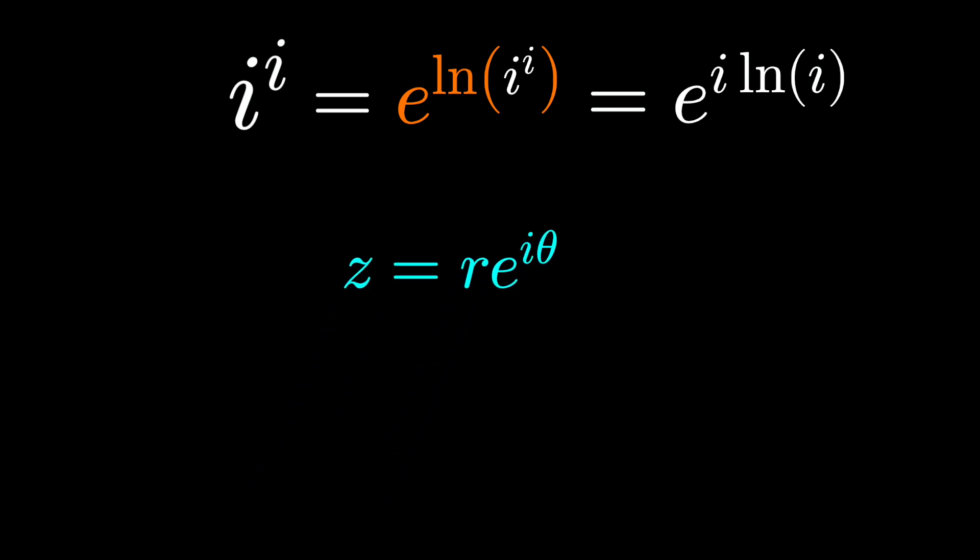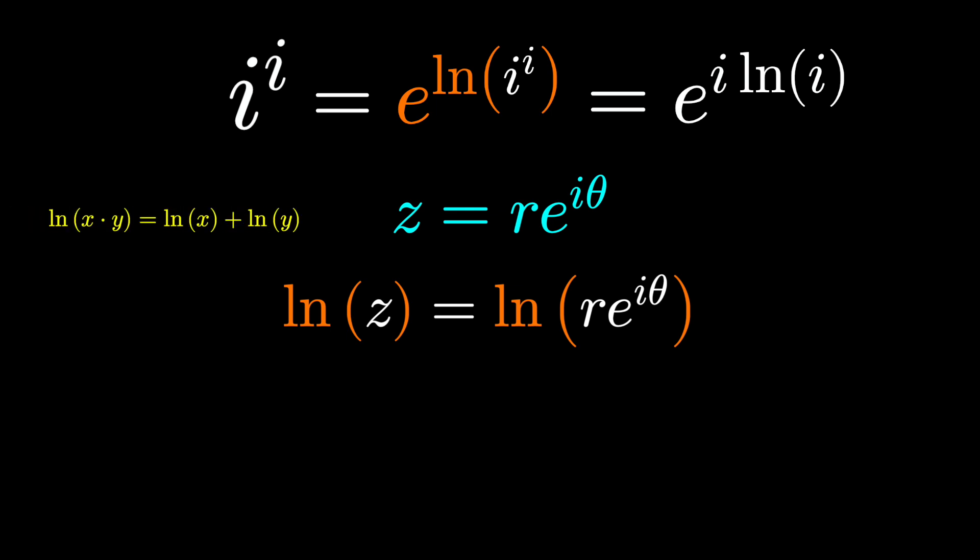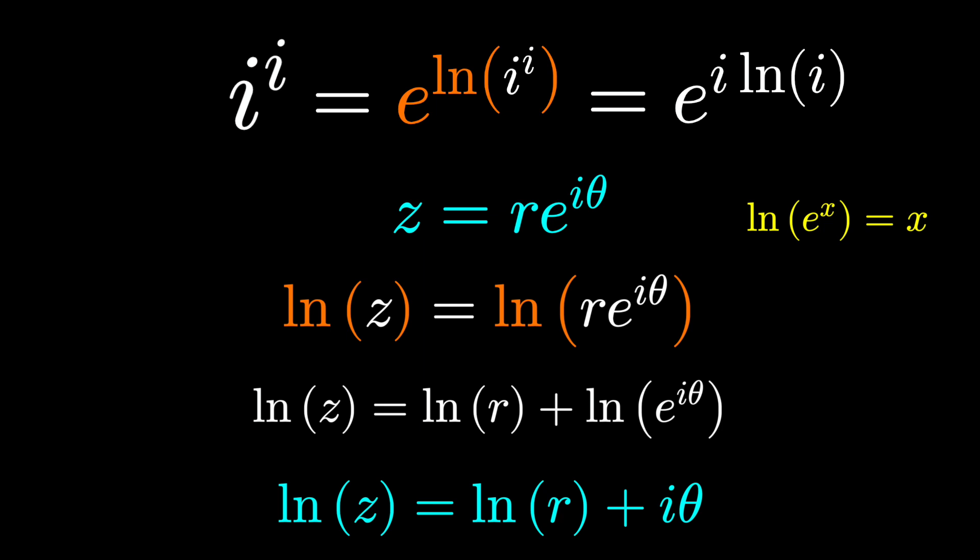This is now very convenient to take the natural logarithm of, since again we can apply properties of logarithms, splitting up this product into a sum of logarithms, and again we're seeing natural log and e canceling out, just going the other way. Again, those are inverse functions, they undo each other. Now we know what the natural logarithm of a complex number should be.